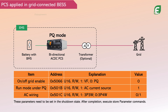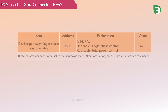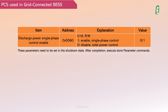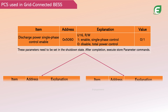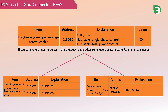The PCS should be configured as a current source, and 3P3W or 3P4W selected based on the configuration of the AC side. These parameters need to be set in the shutdown state. After completion, execute store parameter commands. In PCS grid-connected mode, the discharge power of each phase can be controlled individually, or the total charge and discharge power can also be set.